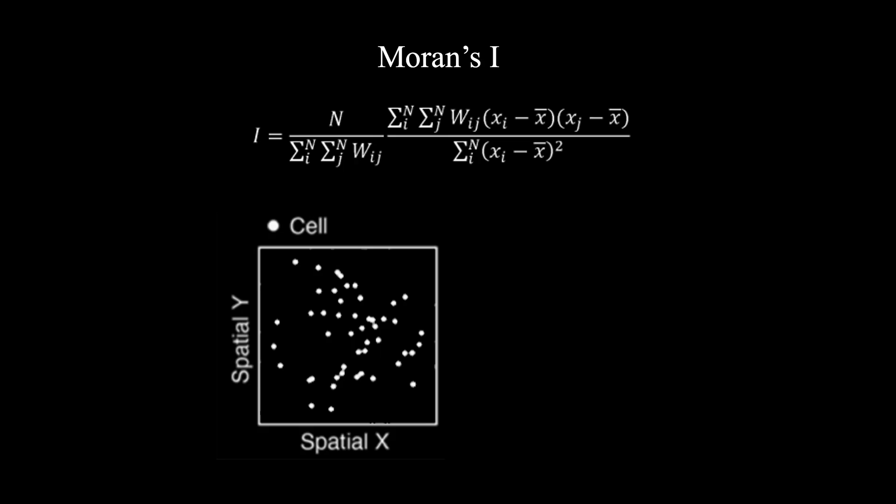But of course, there are thousands of genes to look through, so we don't want to look through them manually. Instead, we want to use statistics to help us filter and rank. Let's see how Moran's I can help us accomplish this.